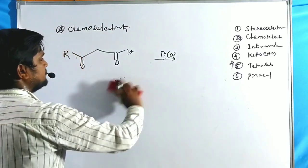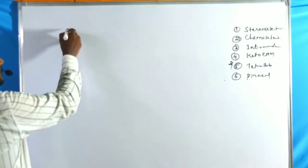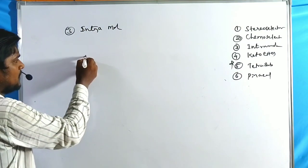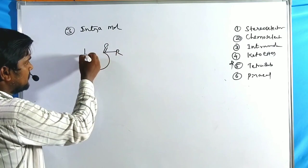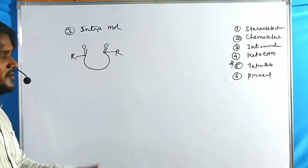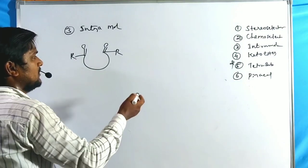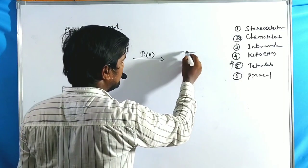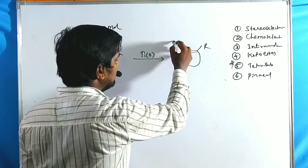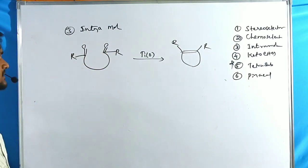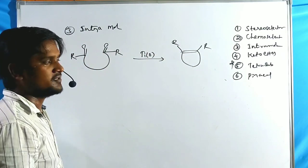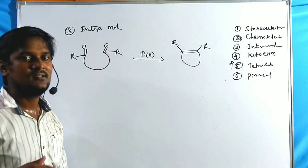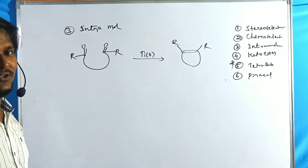The third feature is intramolecular reactions, where a single compound has more than one carbonyl functionality. In the presence of titanium zero catalyst, these combine in a metathesis-type reaction to form cycloalkenes. For example, 1,3-dicarbonyl compounds give cyclopropanol, 1,4-dicarbonyl gives cyclobutane, and so forth.